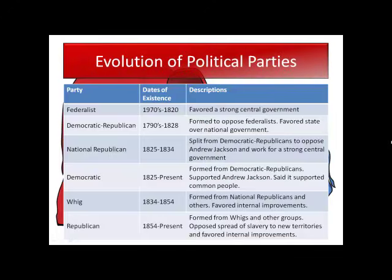Now we have an evolution of political parties. I don't want you to write this whole chart down — I just want to go over it briefly so we understand where we came from. We have the Federalist Party from the 1790s to 1820, which favored central government. The first political party after ratification of the Constitution is the Democratic-Republican Party — not the Anti-Federalists, but they really are the Anti-Federalists.